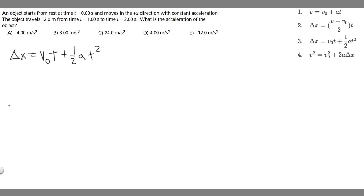In this problem, we're told an object starts from rest at time t equals 0 seconds and moves in the positive x direction with constant acceleration. The object travels 12 meters from the time t equals 1 second to the time t equals 2 seconds. What is the acceleration of the object?